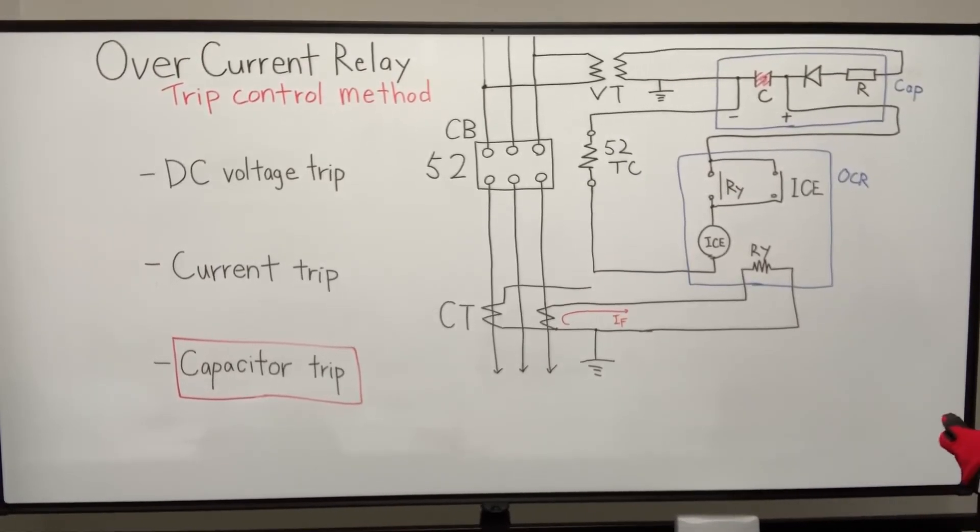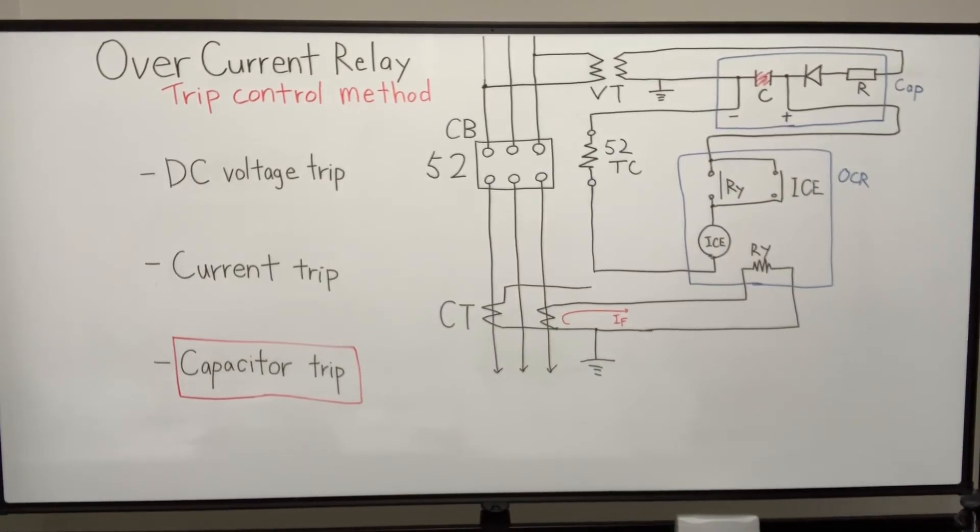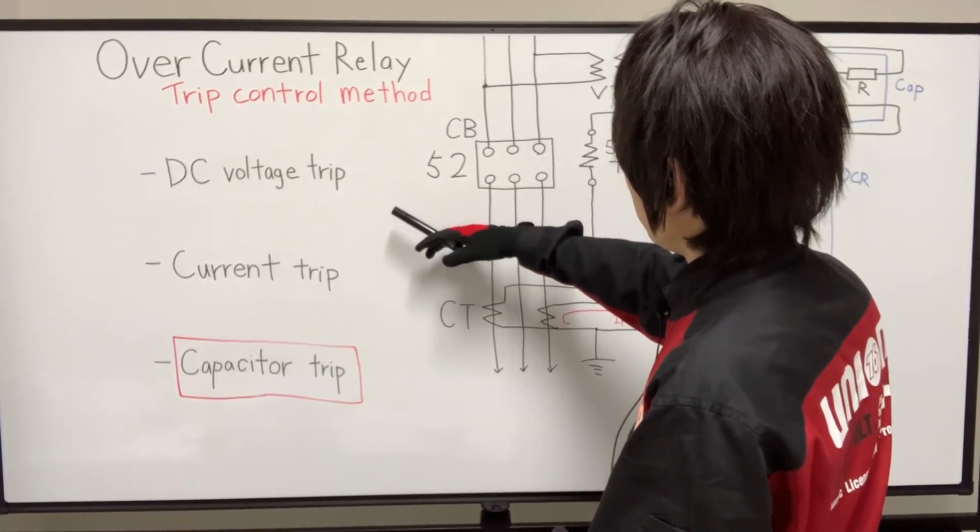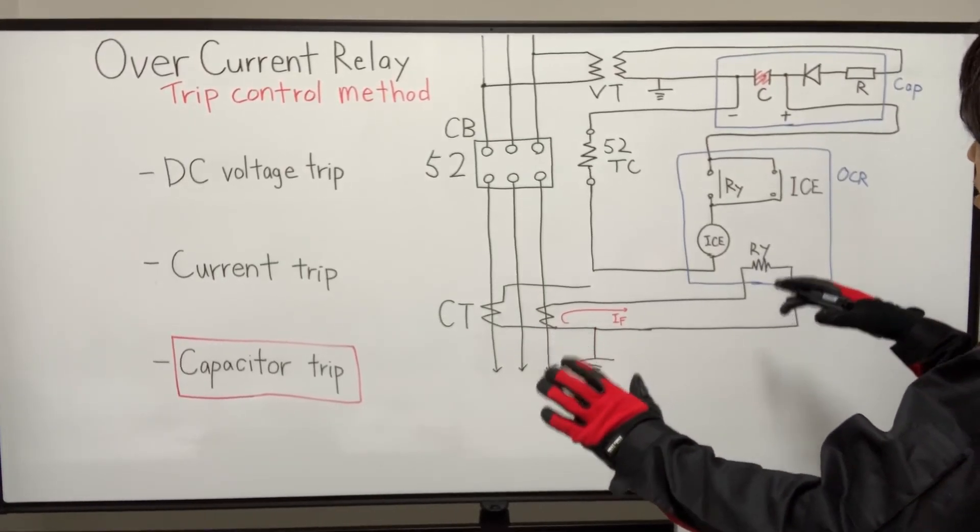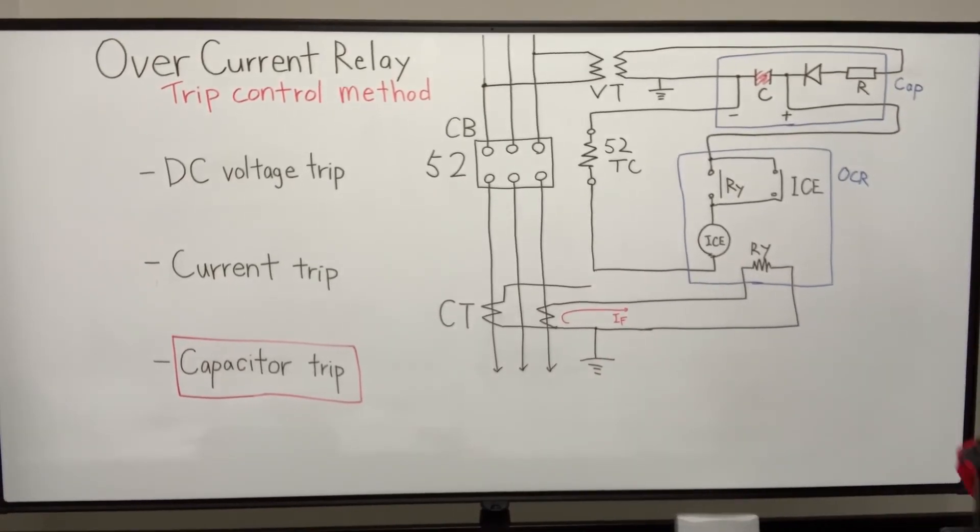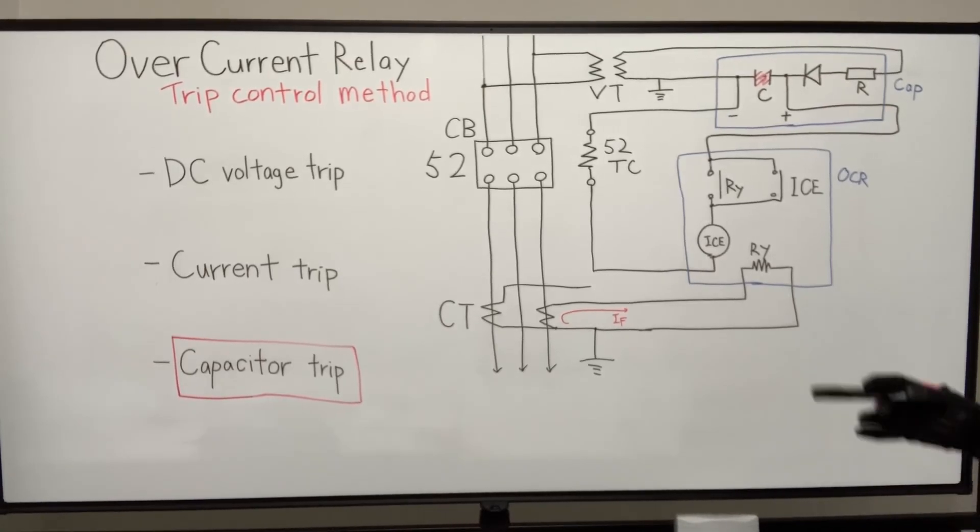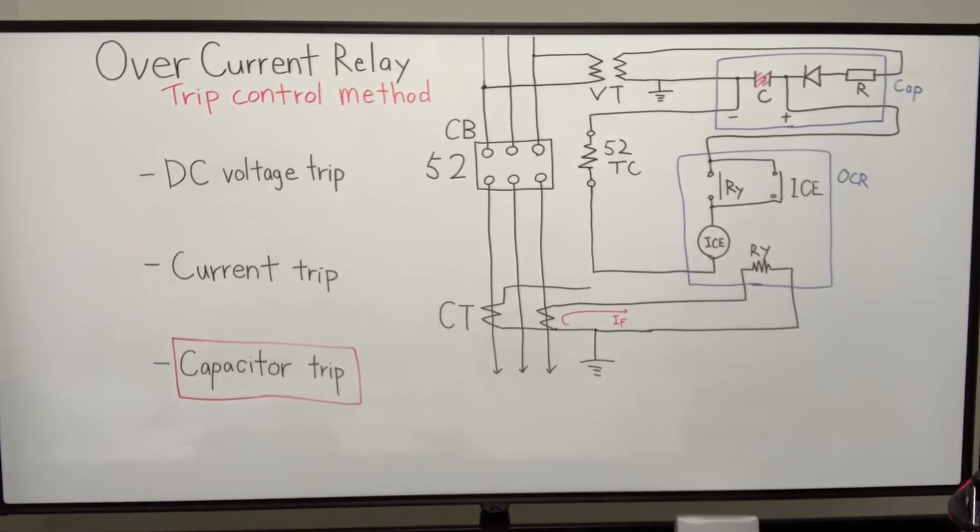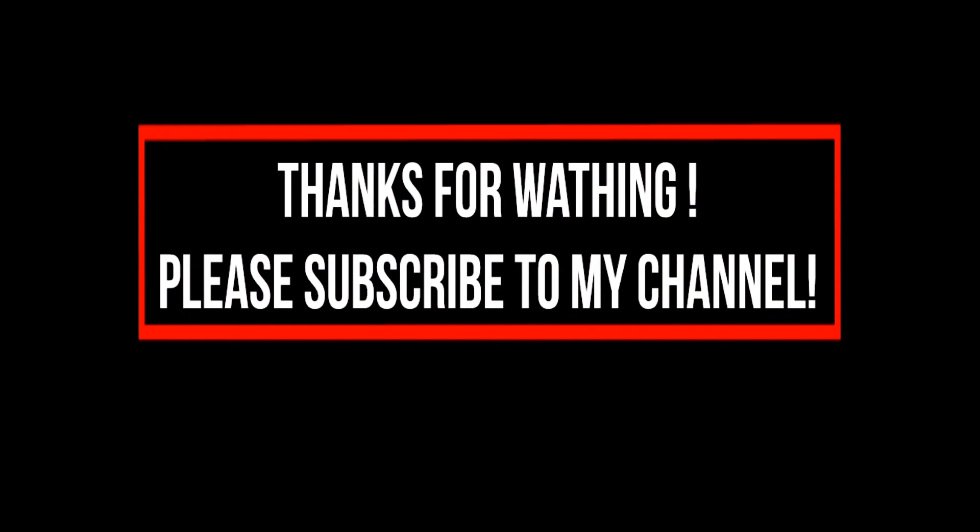But still, the DC voltage trip is the most reliable way. So the capacitor trip is kind of a medium, the medium way. So the cost and reliability is always sort of a compromise. So we need to design very depending on each situation. There are a lot of factors, like regulation of some designing, and the cost and reliability and something like that.